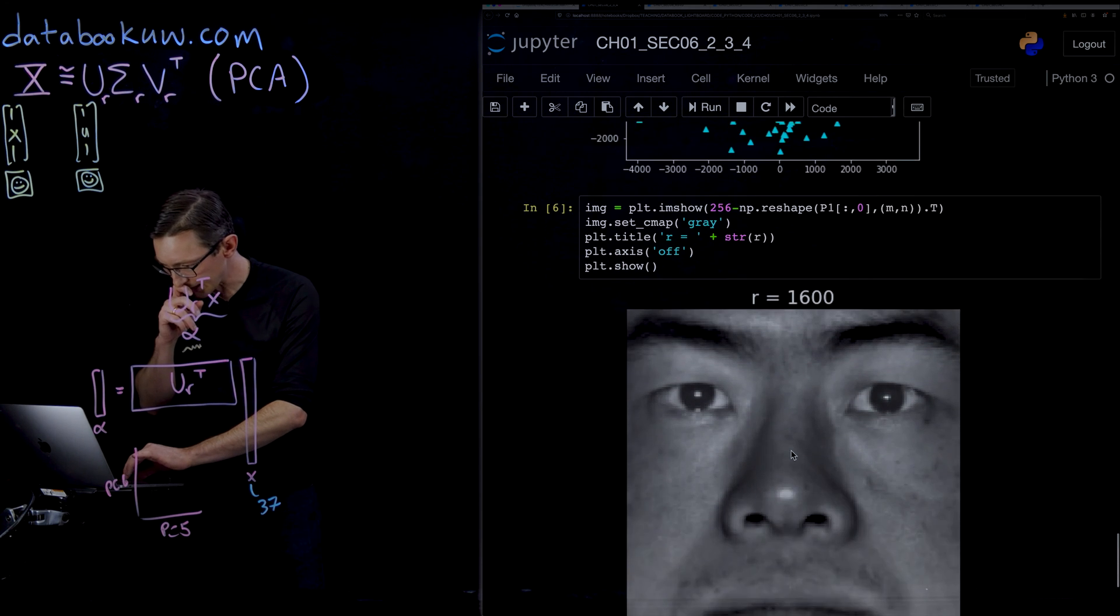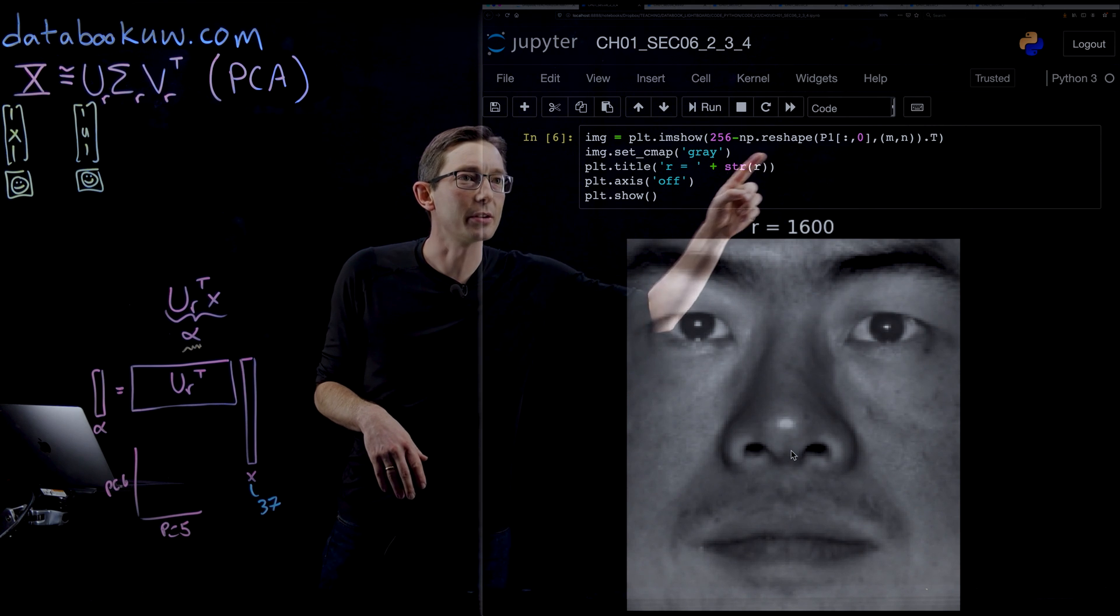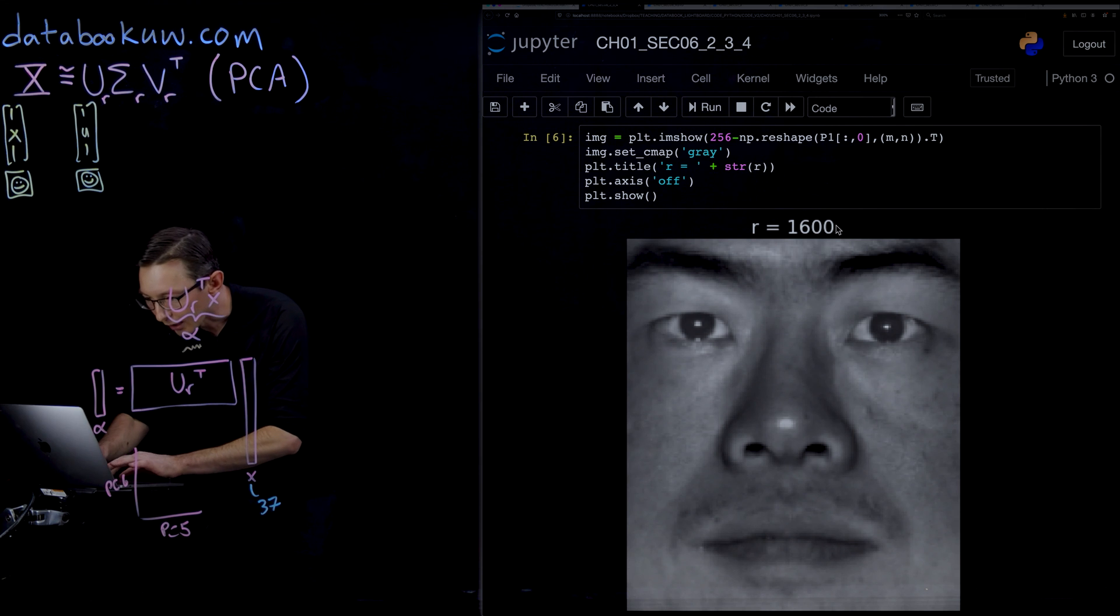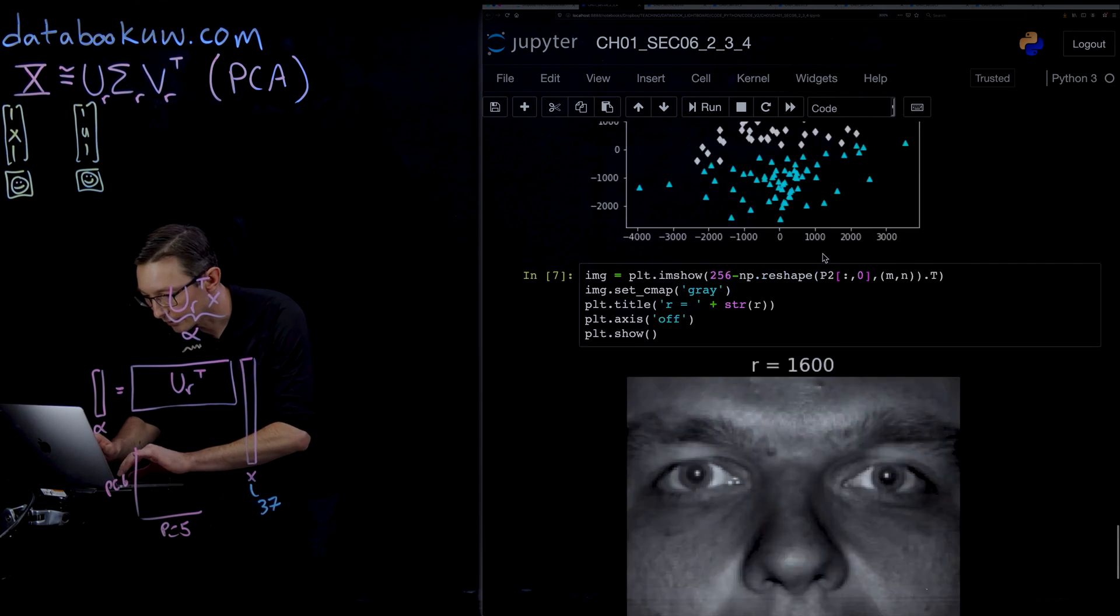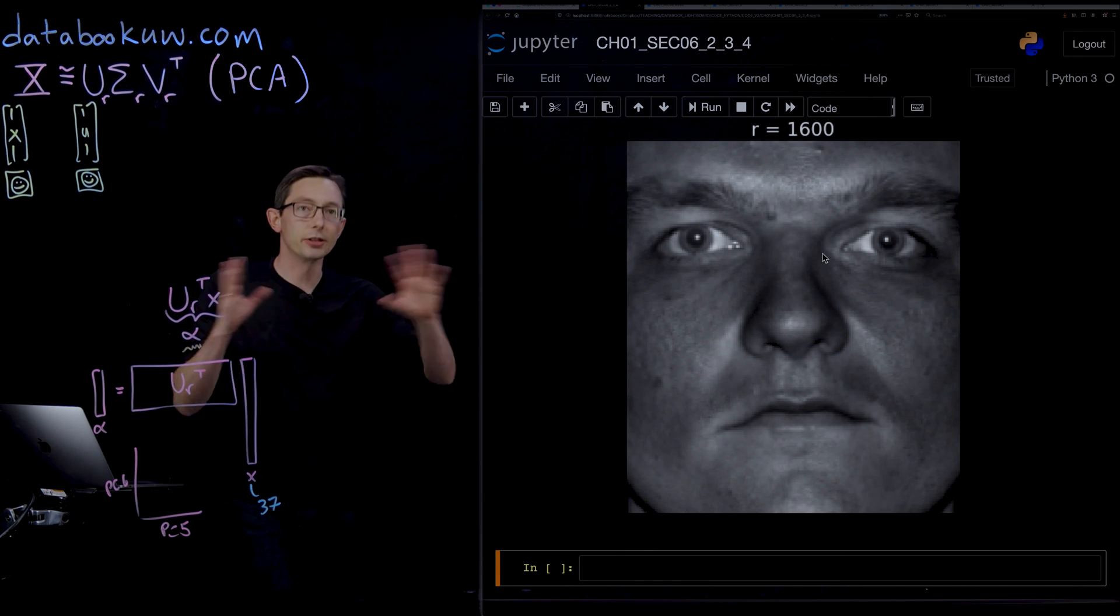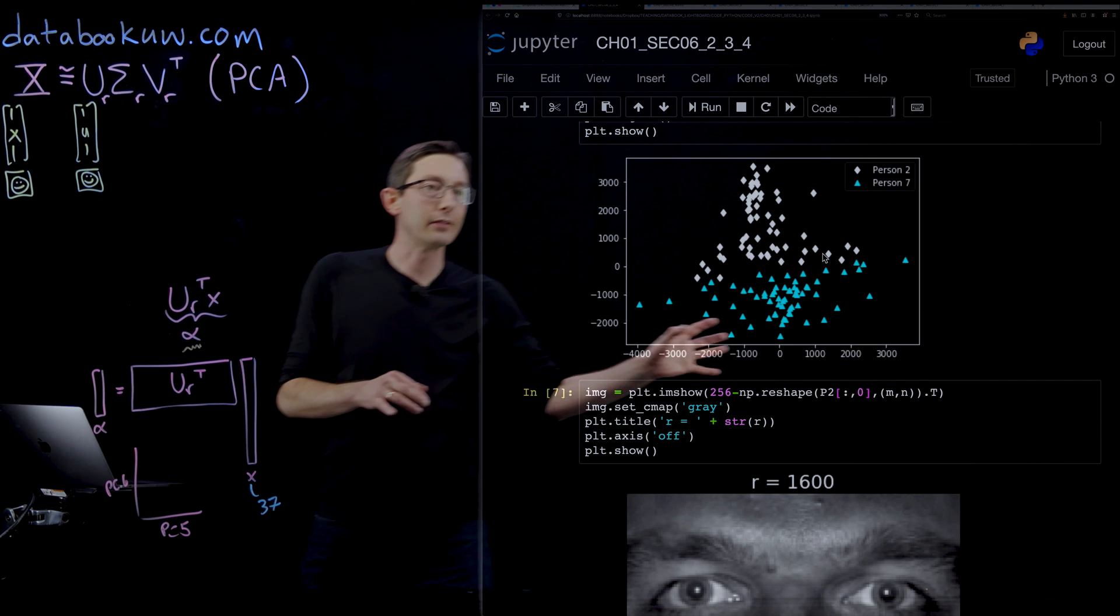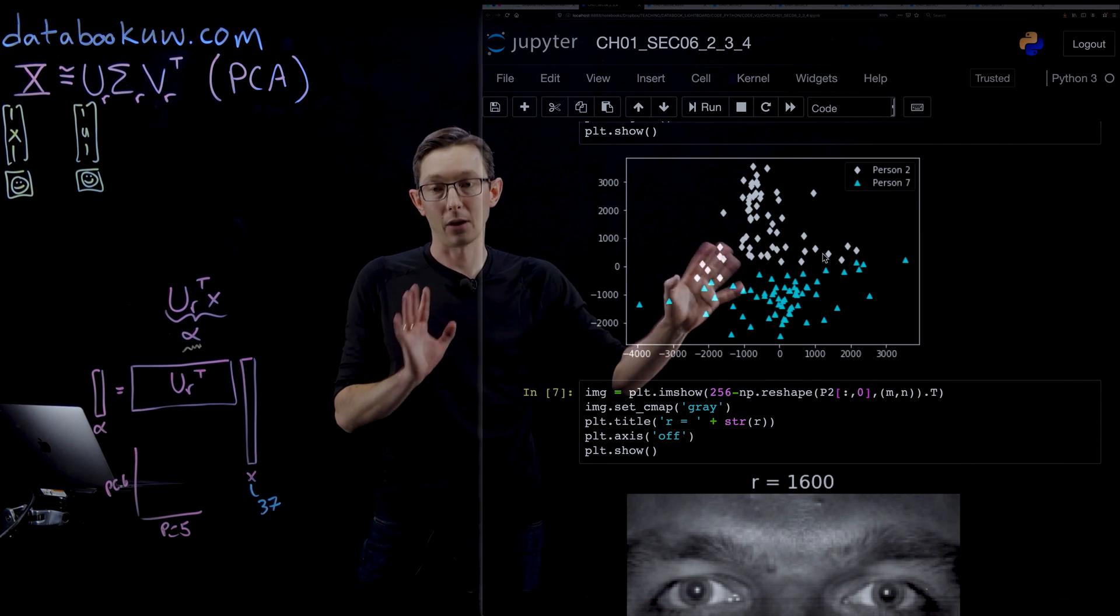Just to show you, you can actually plot person 2—I took the first person image and I plotted that. If you want to see what the second person looks like, they look like that. So those are the two people that we're telling apart, and they very nicely separate and cluster in this space.